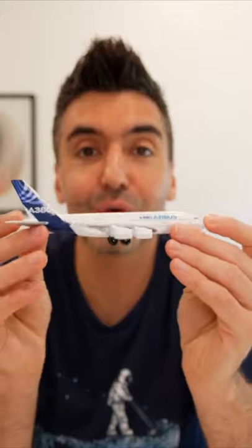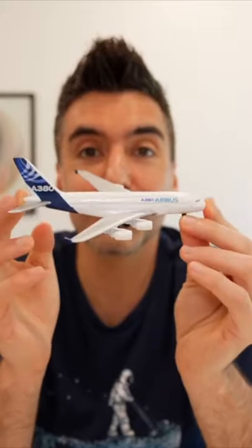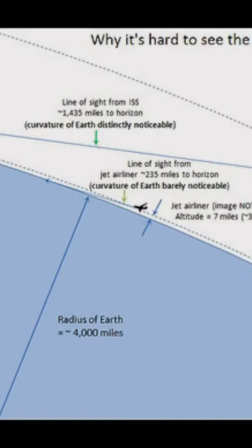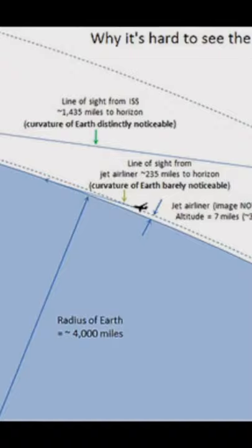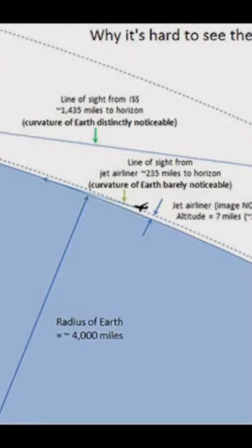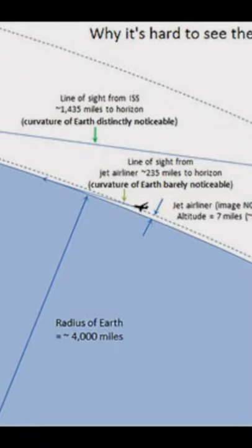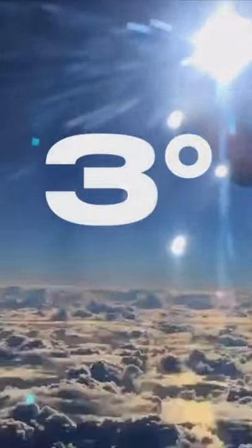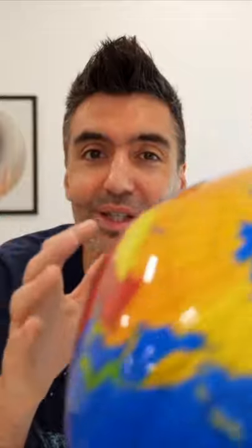So let's go with 10,000 meters, or the average cruising altitude of your commercial jetliner. Crunching the numbers, it turns out that at cruising altitude, the horizon of the earth would only be about three degrees lower than it would be at sea level — so not quite enough to see the curvature of the earth.